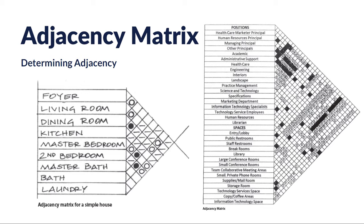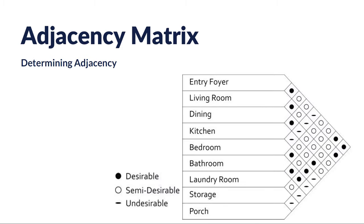The first part of untangling the puzzle is the adjacency matrix. With the adjacency matrix we create a list of all of the needed spaces based on client interviews and so on. Here are a couple of different examples — the one on the left is a smaller project, maybe a simple house, and the one on the right is a much larger commercial type of space. Breaking one of these down, this is the most common look they can have, though they can have different appearances. Using the key here, this particular designer has broken them down to desirable spaces (the black dot), semi-desirable (the white dot), and the dash for an undesirable adjacency.